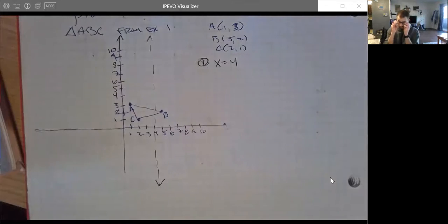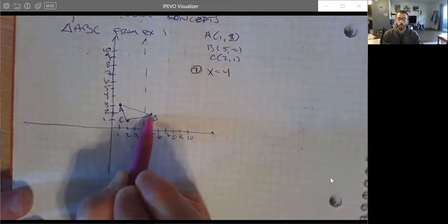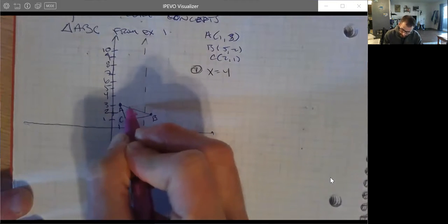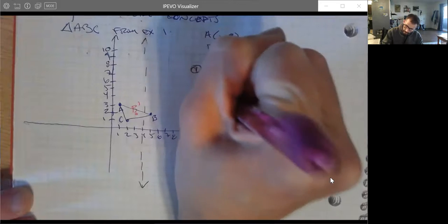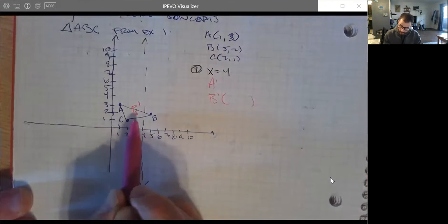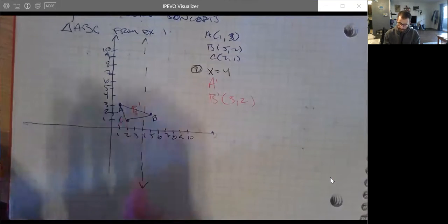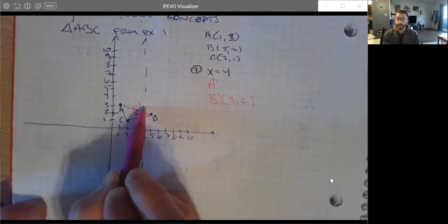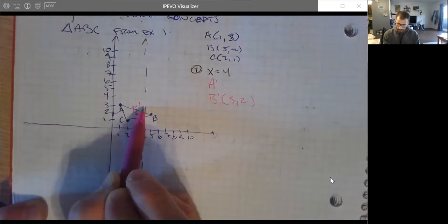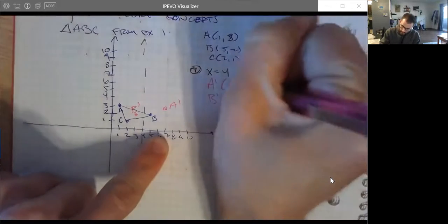I think that, to be honest, I'm going to start with b prime. So b is one box, one unit to the right of the line. So b prime is going to reflect one unit to the left. So b was at 5,2. So b prime is at 3,2.